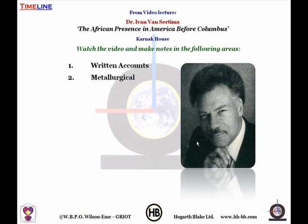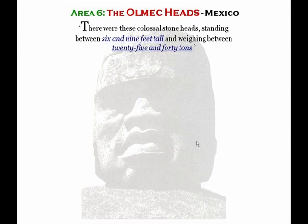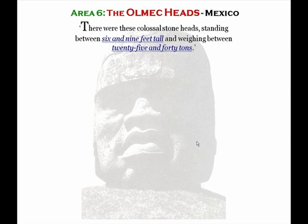These are the areas highlighted by Van Sertema: written accounts, metallurgical evidence — looking at the assaying of gold, because the same gold in Guinea is the same gold used in the Americas — navigational evidence, and botanical evidence. This is an Olmec head. You're going to tell me that is not the face of a brother? See the features there.